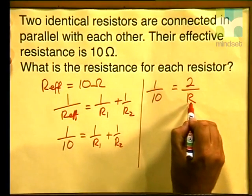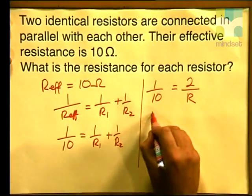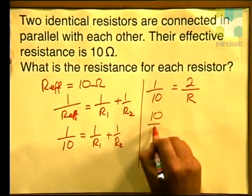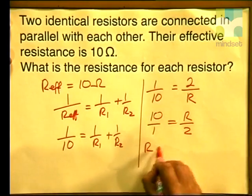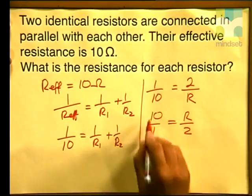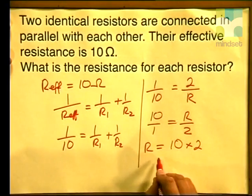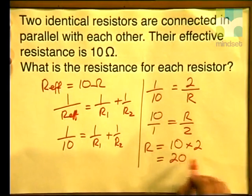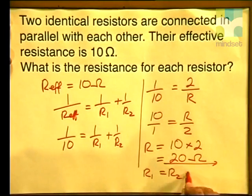I now need to get R on its own, so I must invert the problem: 10 over 1 equals R over 2. Calculating for R, we cross multiply — 10 multiplied by 2 — giving us a value of 20 ohms. Therefore R1 equals R2 equals 20 ohms.